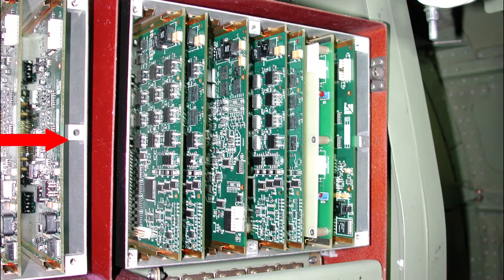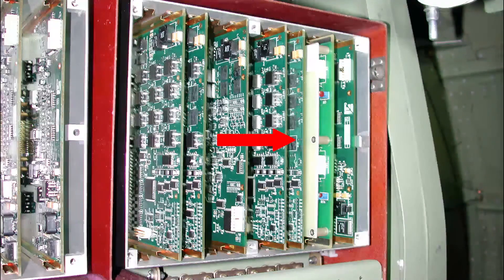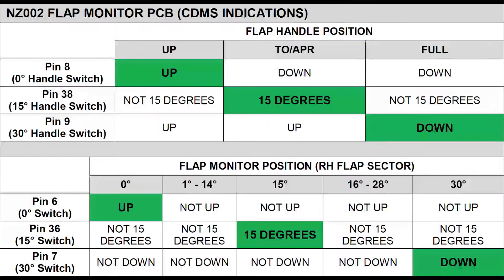The flap monitor PCB, NZ002, contains the right flap sector troubleshooting inputs. The PCB is located in the upper right corner of the aft J-box. The second chart, shown here, provides an avenue to troubleshoot the right flap sector as well as the flap handle. A PDF version of these charts can be located on Cessna Support under the systems section of the 510 page.